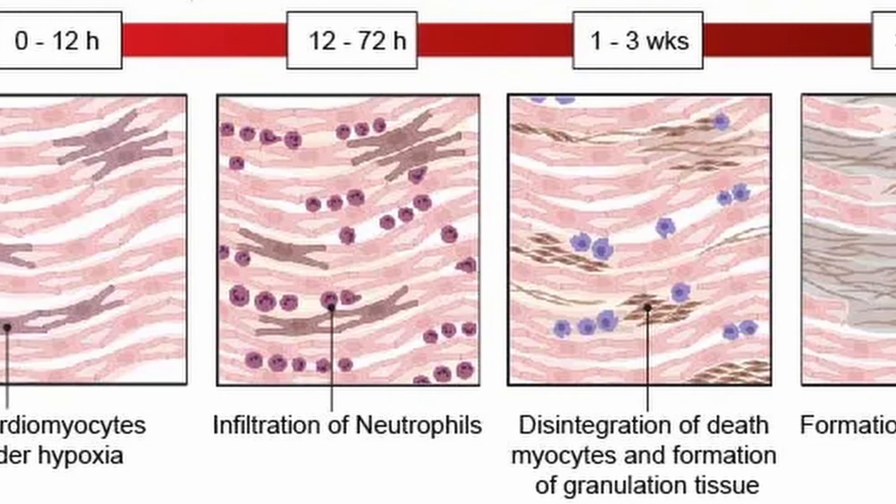Muscle tissue does not come back — the heart and brain tissues don't really regenerate. Once blood flow stops and 20 minutes passes, those cells start to die. Over the next few days, weeks, and months, a repair process occurs, but that repair usually involves re-establishment of tissue not with normal muscle but with scar tissue. Scar tissue is not functional — it's great for repairing wounds, but it leads to irreparable loss of function.